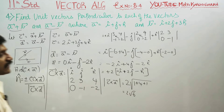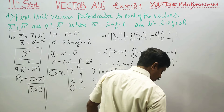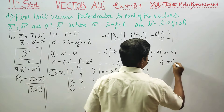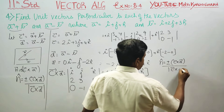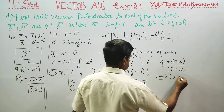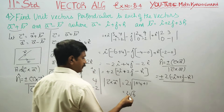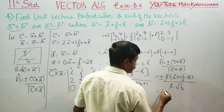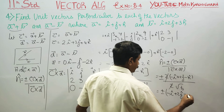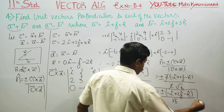Now for the final answer: n-hat equals plus or minus c cross d divided by the magnitude of c cross d. c cross d is minus i plus 2j minus k (after factoring), divided by 2 root 6. The factor of 2 cancels, so the final answer is: n-hat equals plus or minus (minus i plus 2j minus k) divided by root 6.